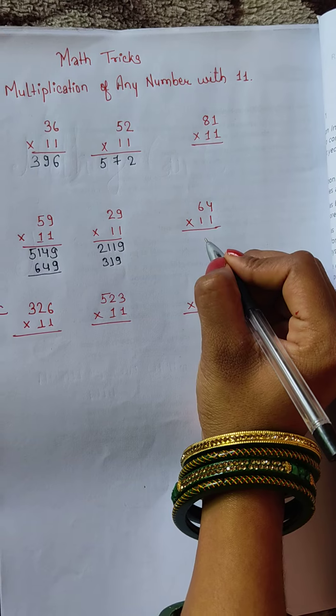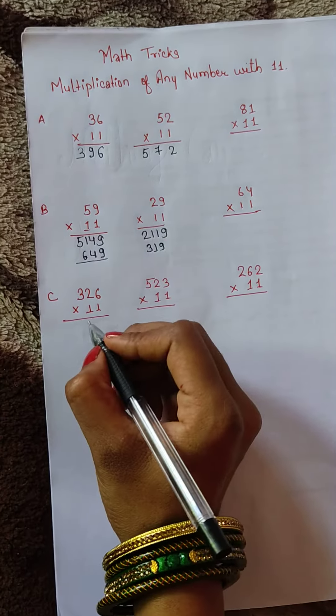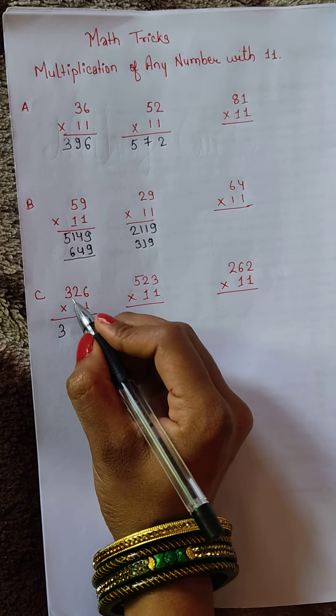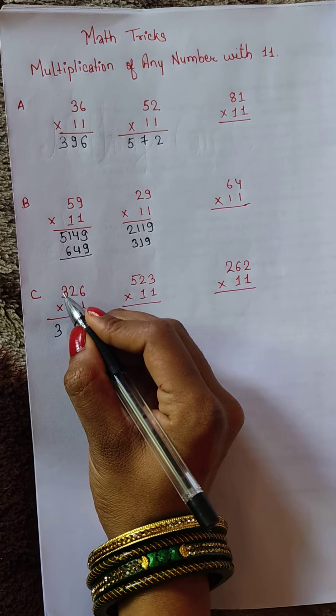Here we have 326. Write 3 and 6, then what will we do? We will add 3 plus 2 and 6 plus 2.